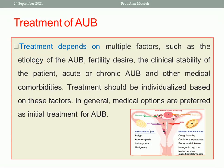Treatment of abnormal uterine bleeding depends on multiple factors: the etiology, the patient's fertility desires, the clinical stability of the patient — whether acute or chronic — and other medical comorbidities. Treatment will be individualized based on these factors, and we start mostly with medical treatment first.